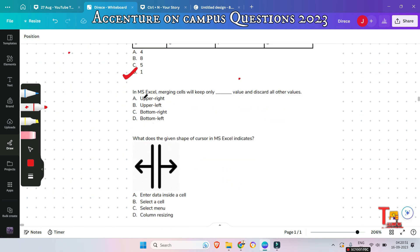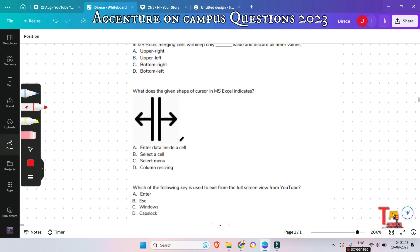Okay, the next question is, in MS Excel merging cells will keep only dash value and discard all others. I have already told here, right? So, please give me the answer in the comment section. I am waiting for your answer.